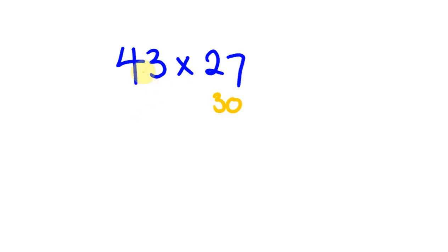So if we were to do, instead of 43 times 27, we were to go 43 times 30, the answer you're going to get to this is 1290. So 4 threes are 12, and then the 3 threes are the 90.